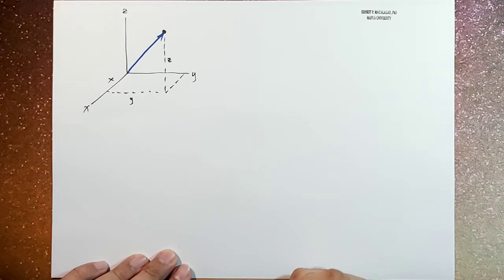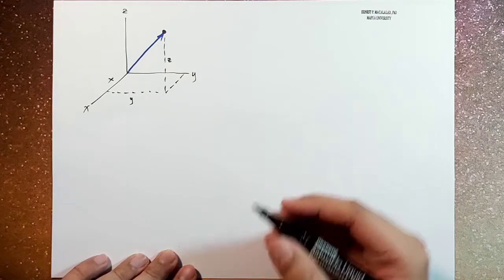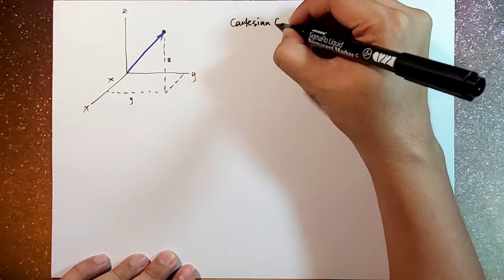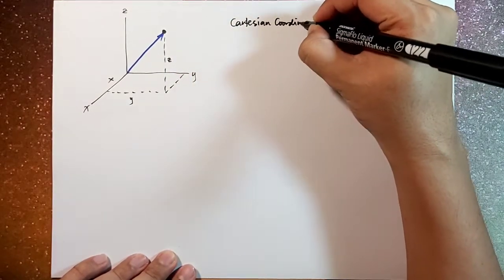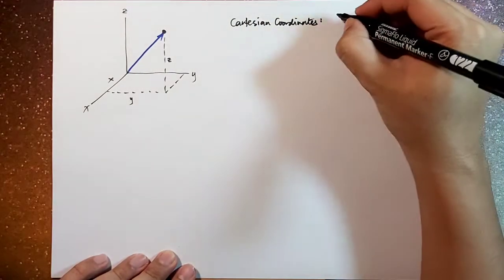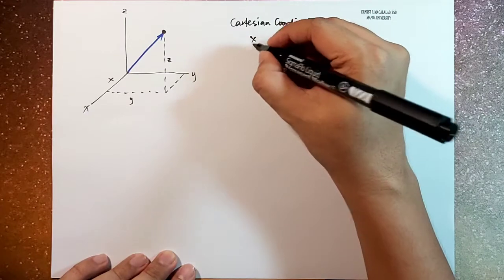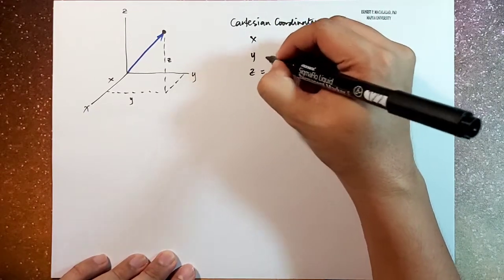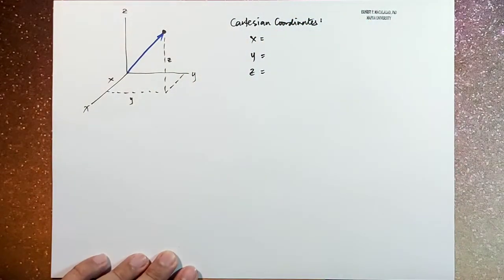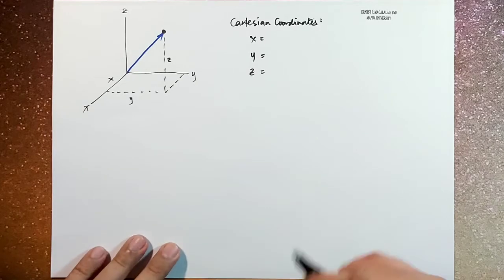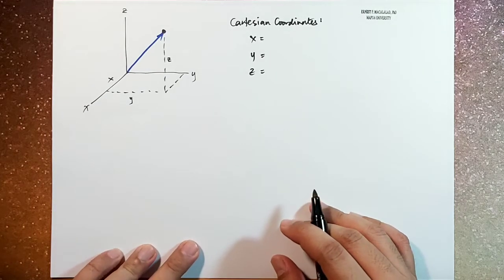Now the Cartesian coordinate, therefore, has three components, x, y, and z. Now, in terms of the cylindrical coordinate system, we define the following components of the cylindrical coordinate system.